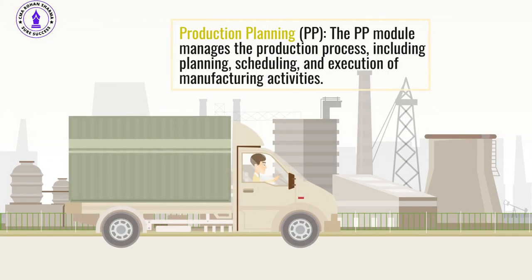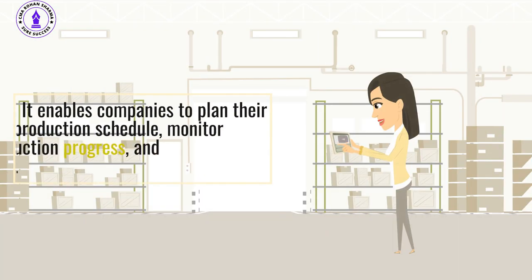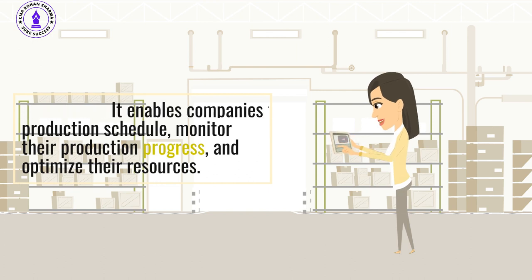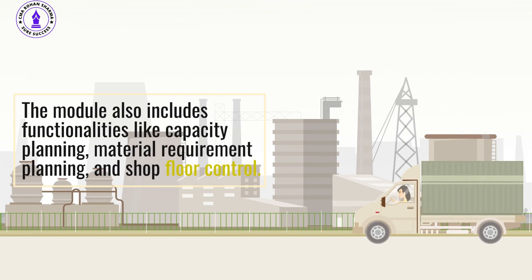Production Planning: The PP module manages the production process, including planning, scheduling, and execution of manufacturing activities. It enables companies to plan their production schedule, monitor their production progress, and optimize their resources. The module also includes functionalities like capacity planning, material requirement planning, and shop floor control.